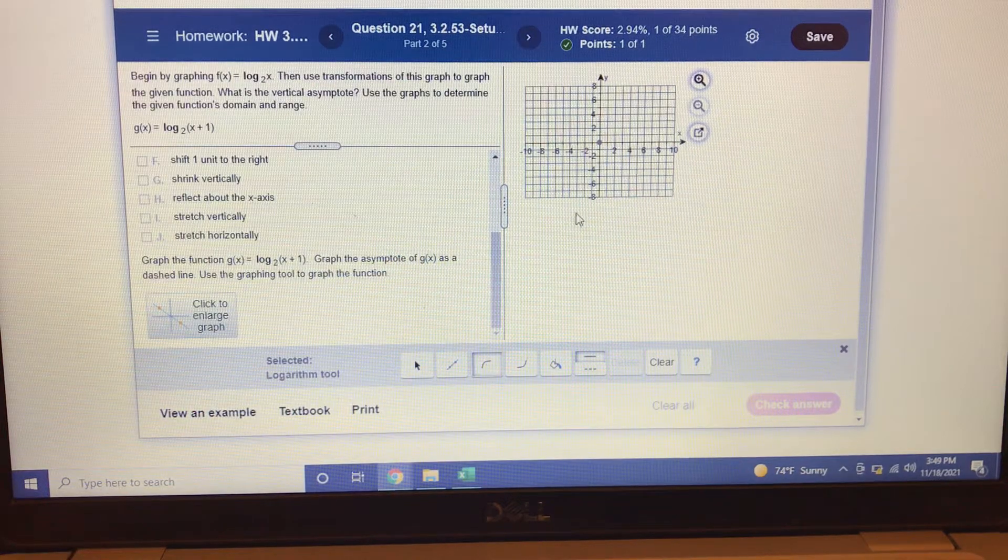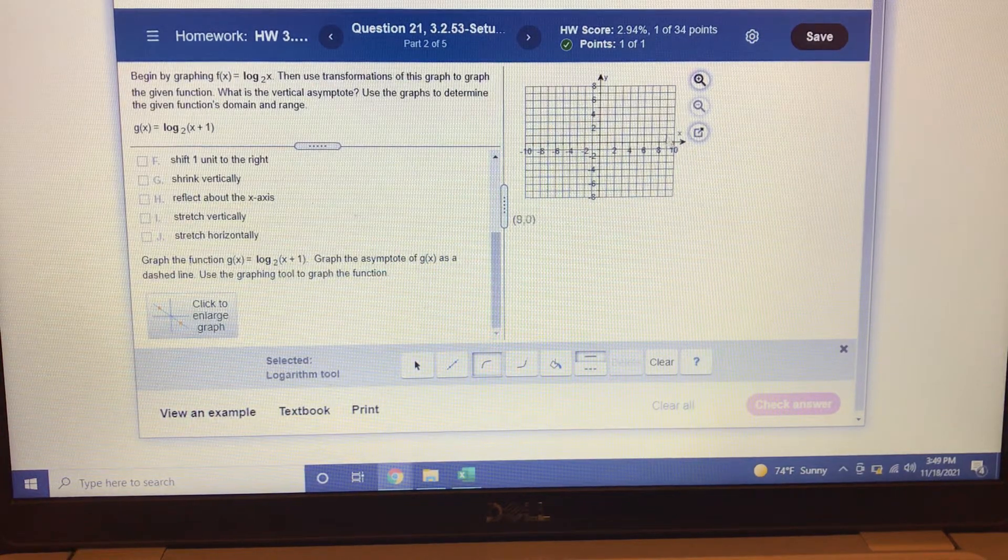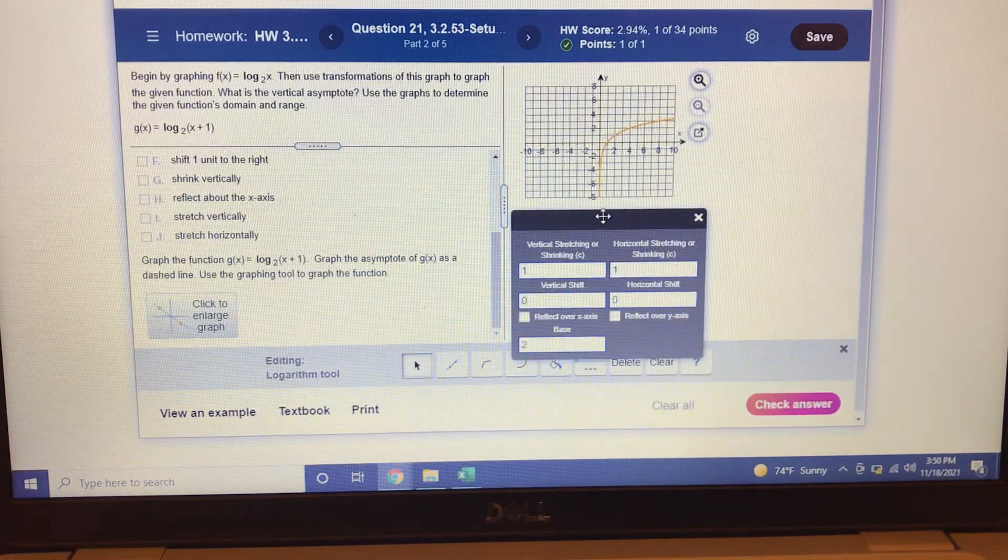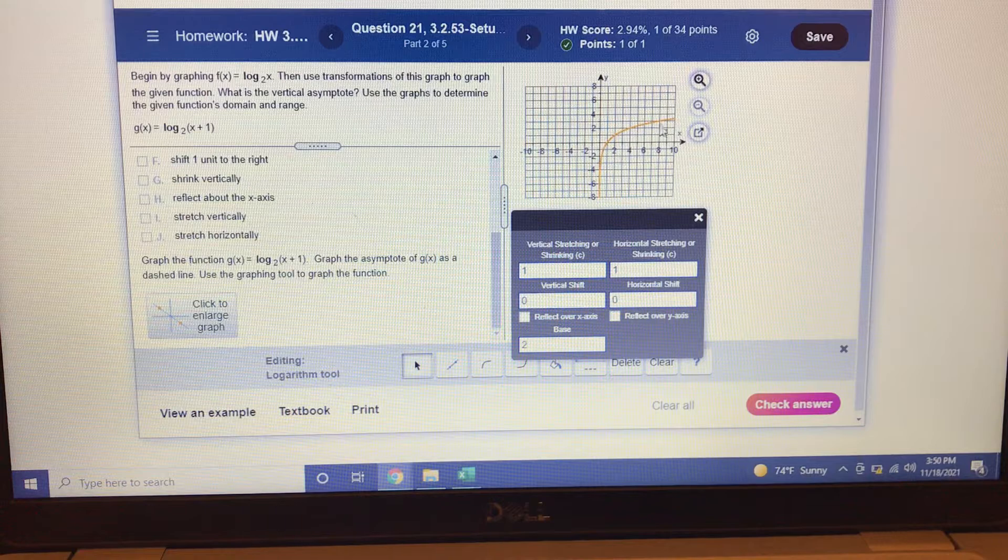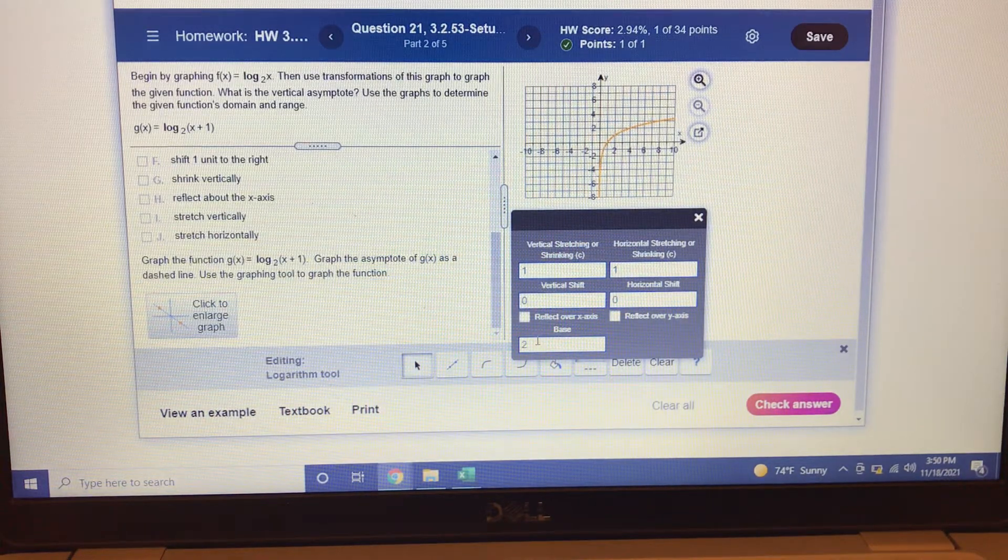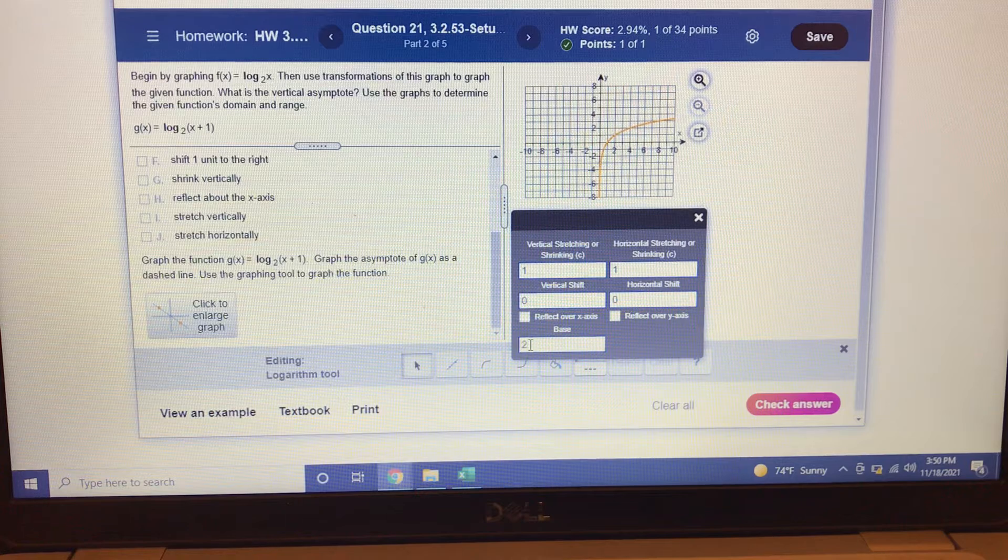And then you can click anywhere in the graph, and it's going to pop up your basic logarithm. I'll click it up here just to show you. It doesn't matter where you click. It gives you the basic logarithm like that. Now very nice of them. See the base 2 is already in there. Very nice of them to do that for us.